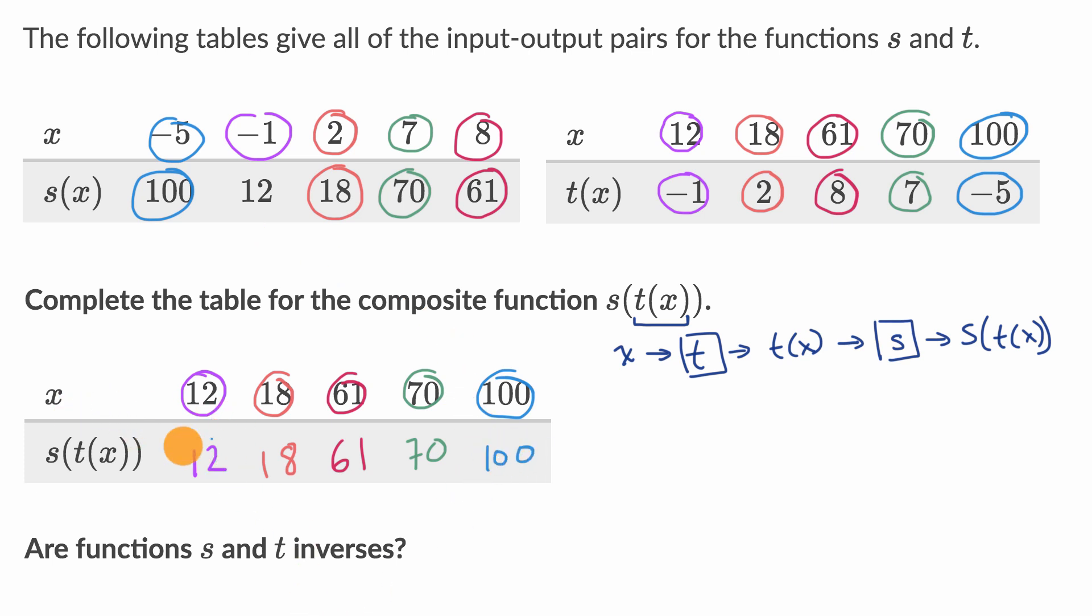So in every situation that we have looked at right over here, in all of these situations, we see that s of t of x is equal to x, which inclines us to believe that they are inverses. Remember, if these two are inverses of each other, this would be true. And also t of s of x is going to be equal to x. But we don't really know 100%, unless we know that we have looked at every combination in the domains for each of them.